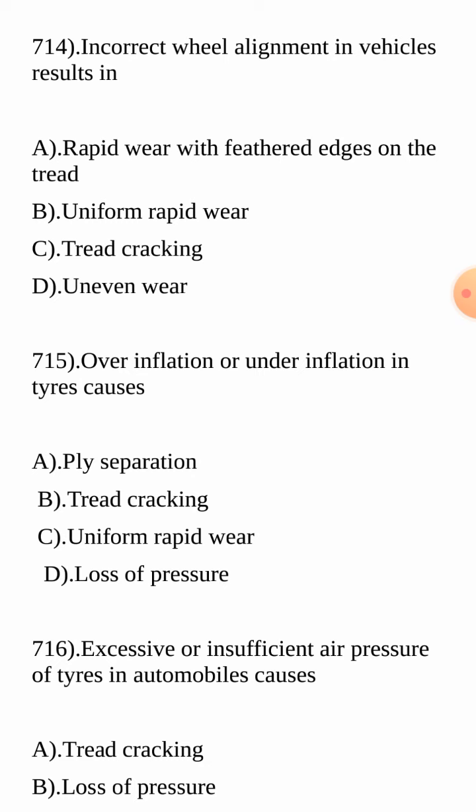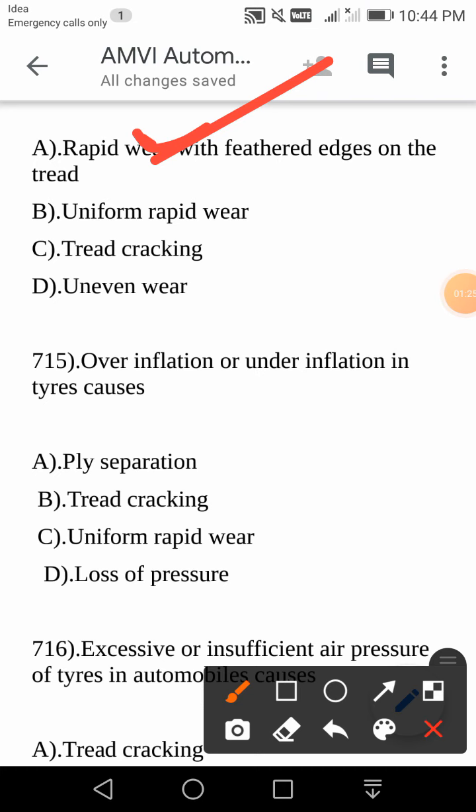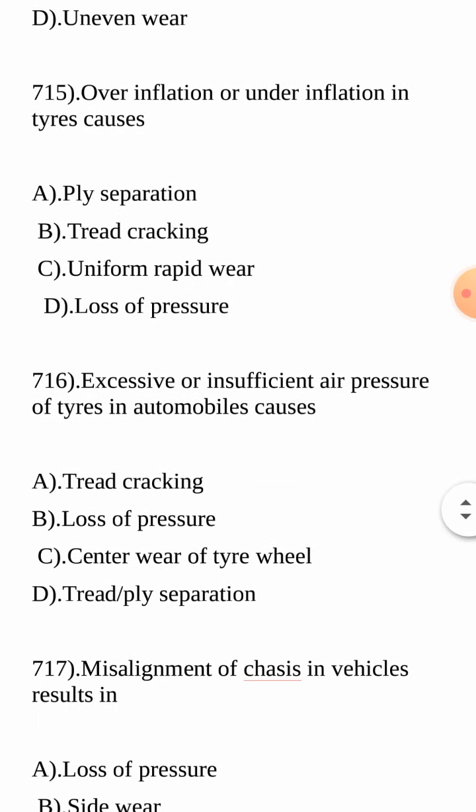Incorrect wheel alignment in vehicles results in — so today in this video we are going to see about tires, causes, and effects of incorrect operation. Is it rapid wear with feathered edges on the tread, uniform rapid wear, tread cracking, or uneven wear? Incorrect wheel alignment is a separate important topic. The answer is: rapid wear with feathered edges on the tread.